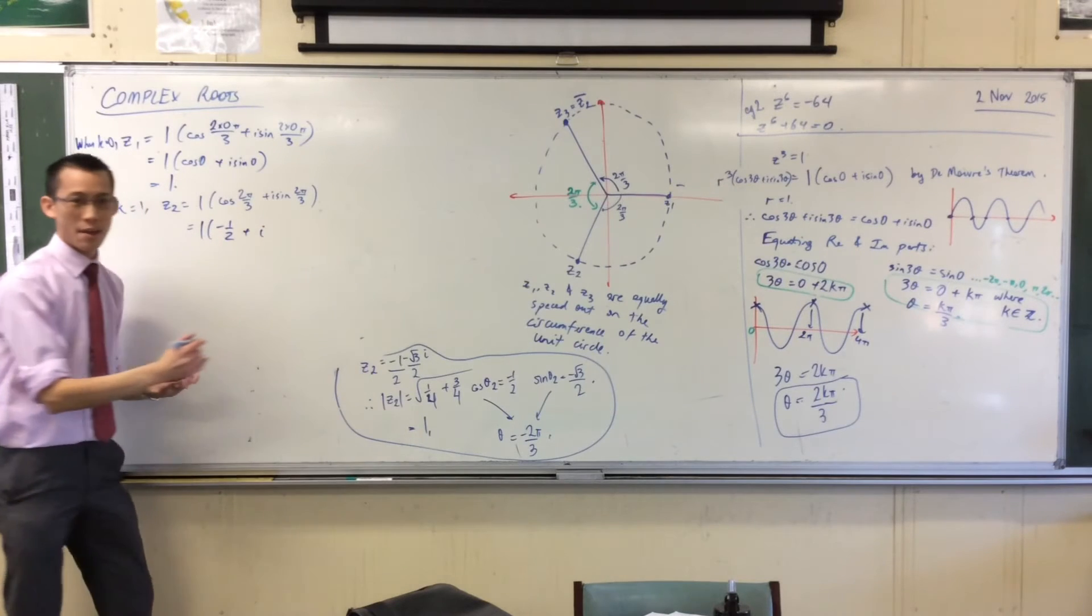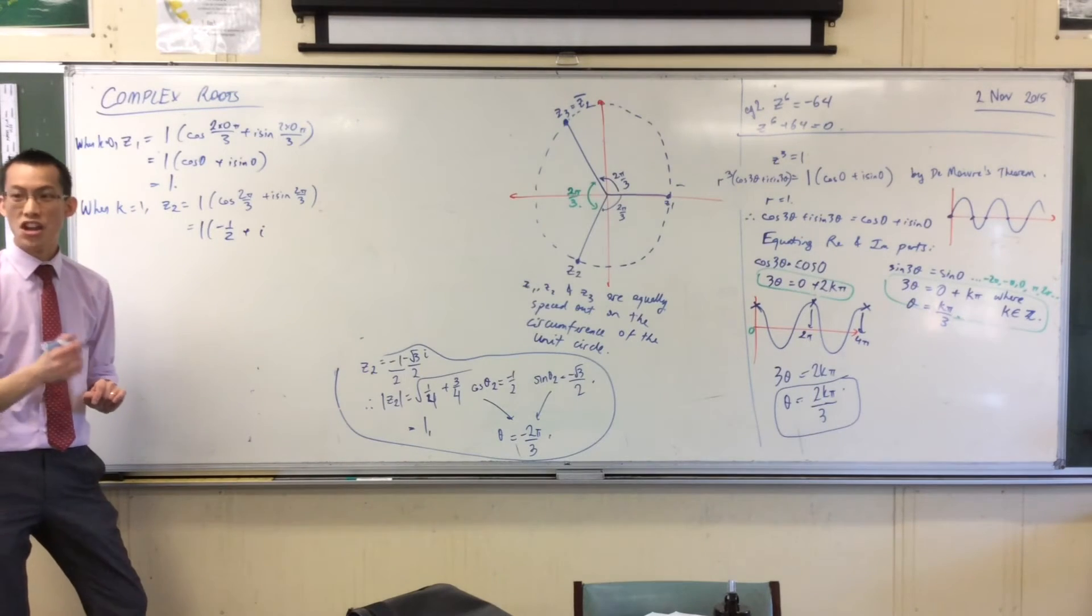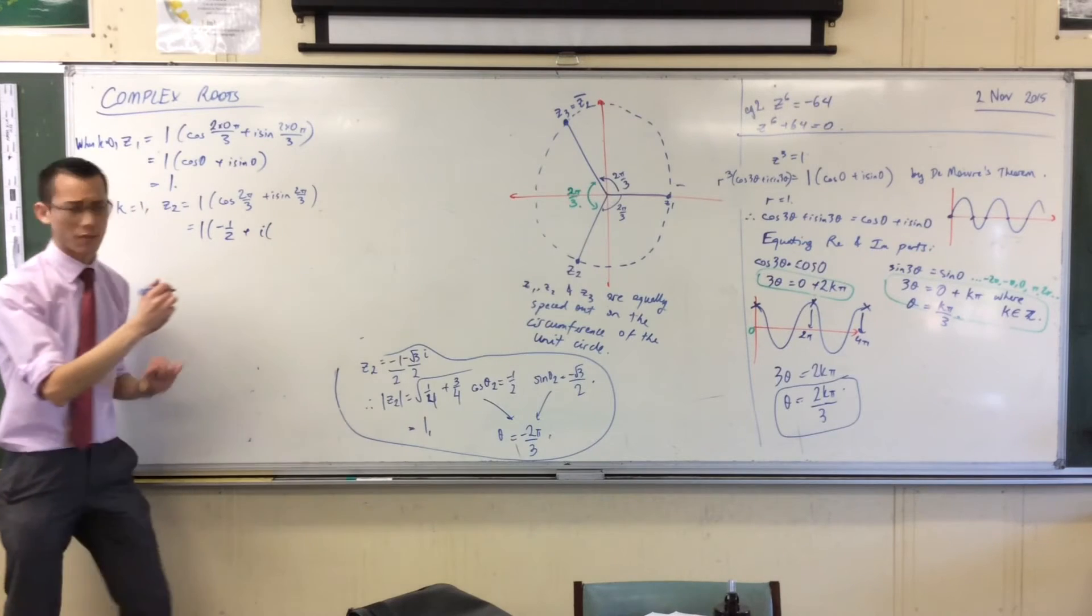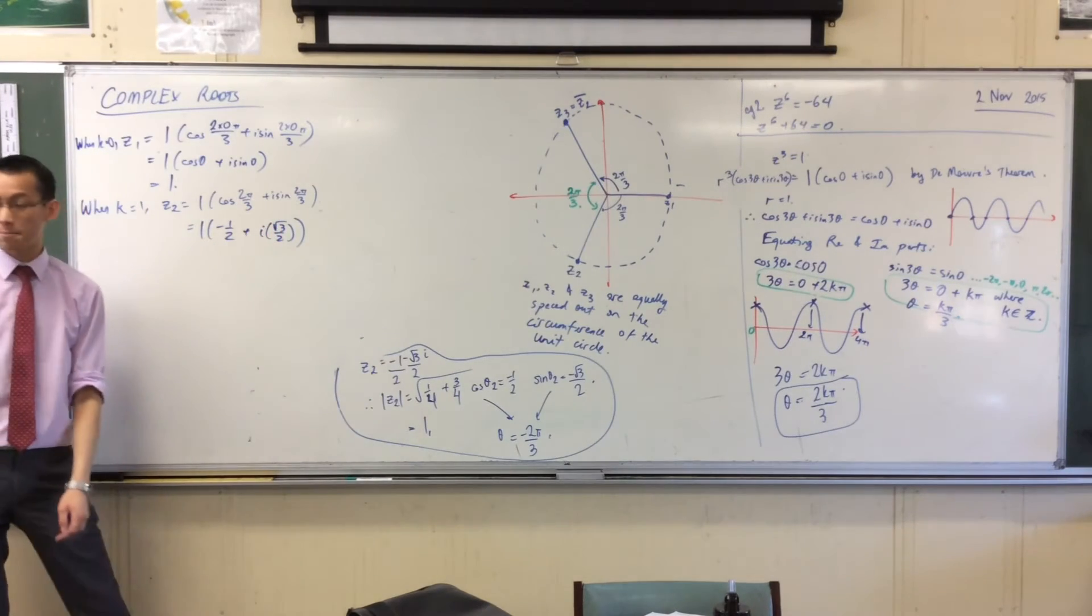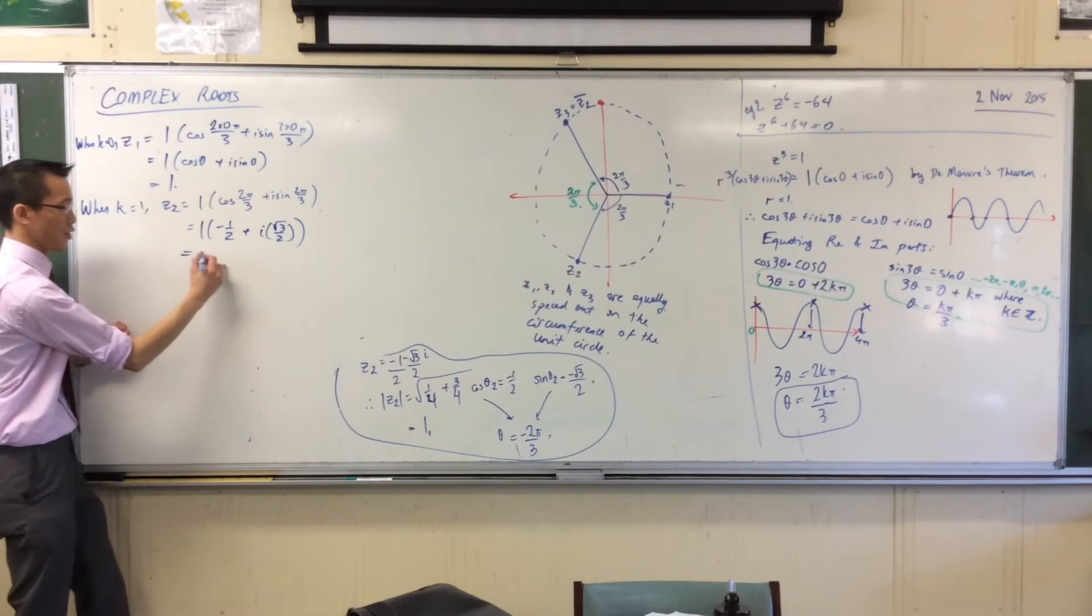Plus i times, and I'm going to get negative root 3 on 2. Or am I getting positive? Oh yeah, I'm positive. Root 3 on 2. Okay, you're right with that? Let's just tidy this up.